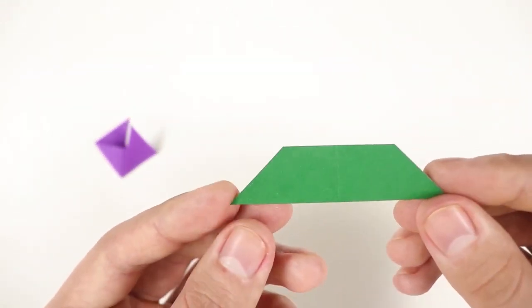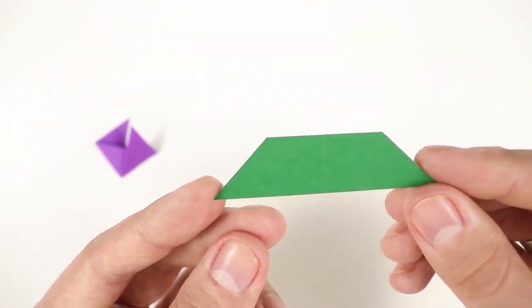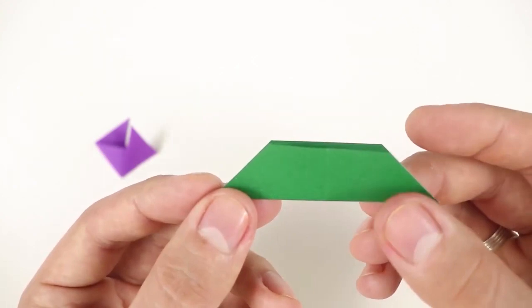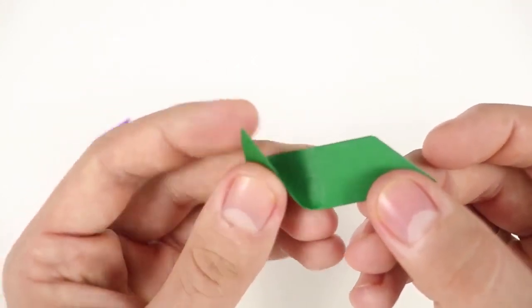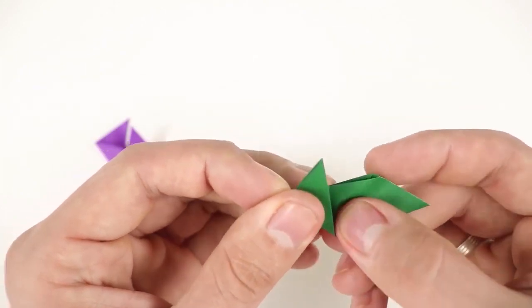Here, we need to fold the left side to the middle. So, just bring half of the bottom side, to the middle, making a diagonal fold.